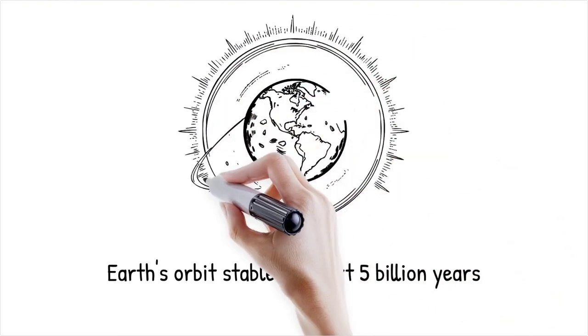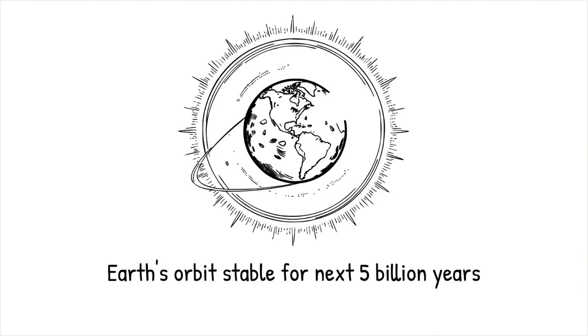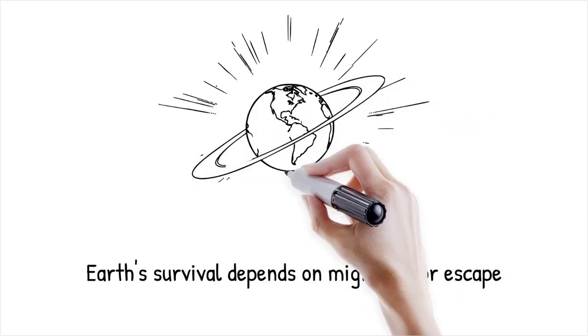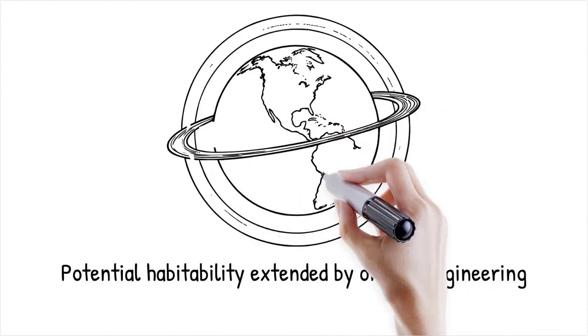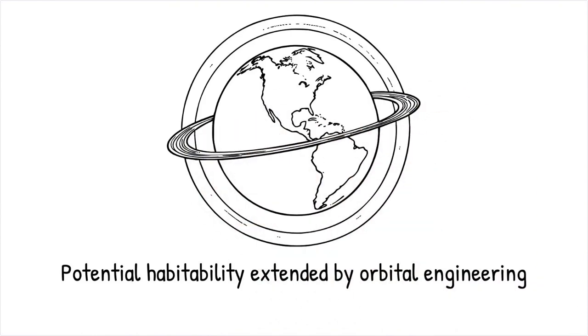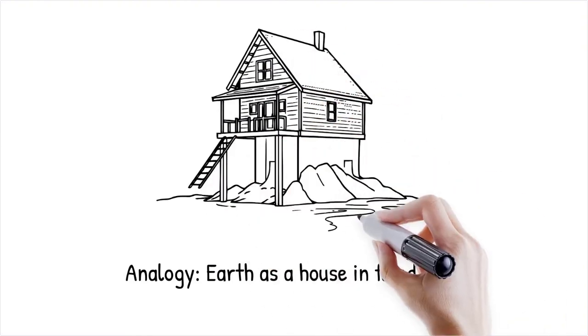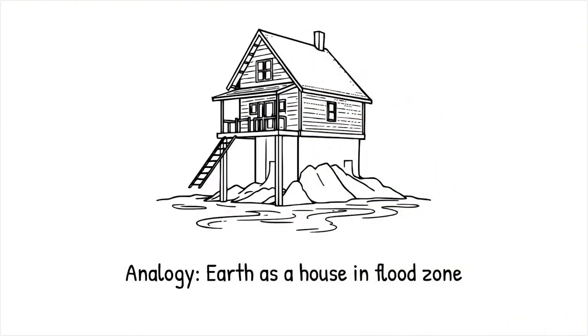Barring unexpected astrophysical events, Earth's orbit will remain stable for at least another 5 billion years, until the sun's transformation into a red giant. By then, the planet will likely be uninhabitable due to increasing solar radiation, forcing humanity, if still present, to seek alternatives such as colonization of other planets or artificial habitats. Whether Earth ultimately survives depends on its ability to migrate outward or escape the sun's expanding envelope. Studies predict that Earth could remain habitable for another 500 million to 1 billion years, with gradual migration outward extending that window by a few billion years if engineered properly. Like an aging house in a flood zone, Earth's long-term survival depends on whether it can be reinforced or relocated before the inevitable environmental changes take over.